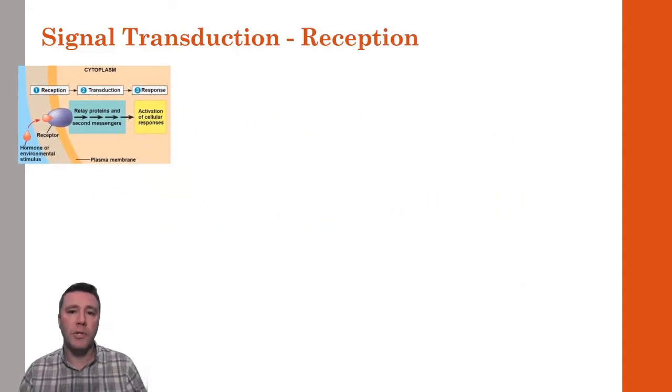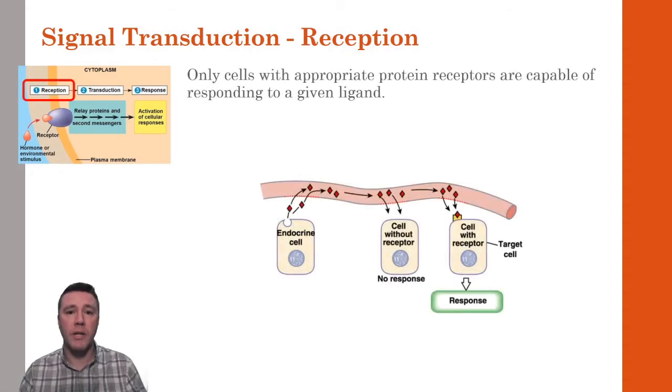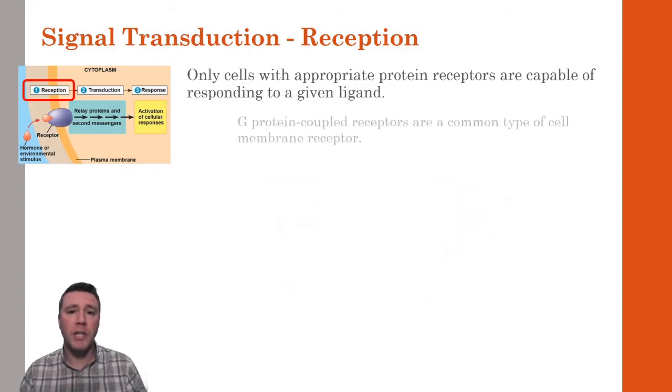In the reception stage, a ligand binds to a target cell's receptor protein. While there are a number of different kinds of receptor proteins, G-protein-coupled receptors are one of the most common ones. Let's take a look at a short animation that will describe the basic function of one of these receptors.